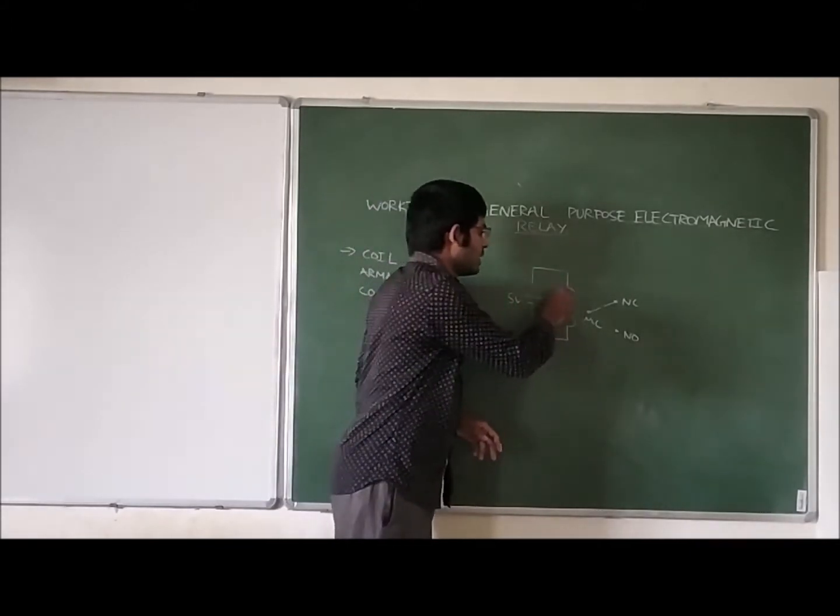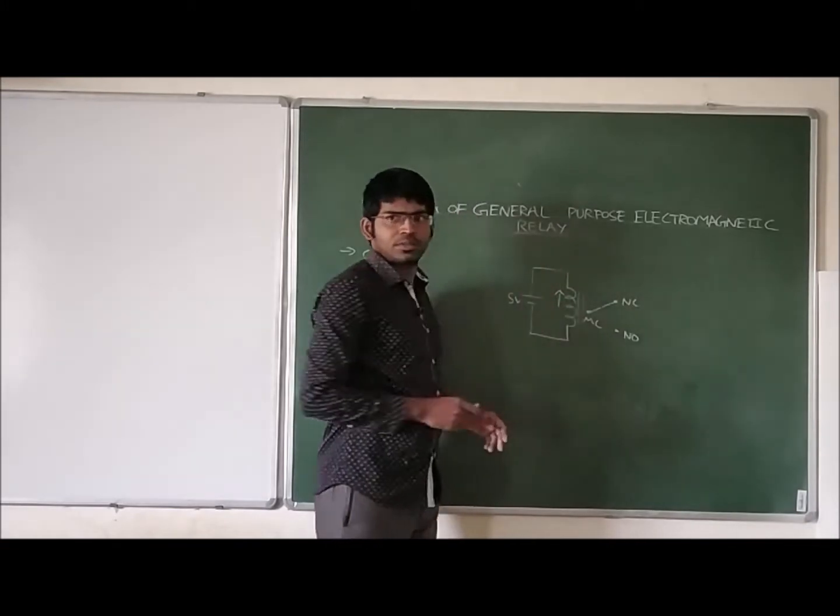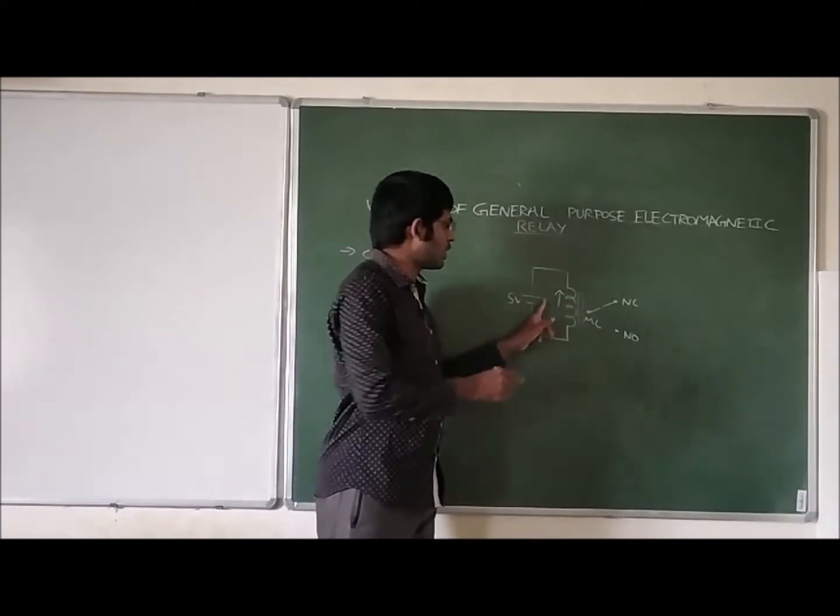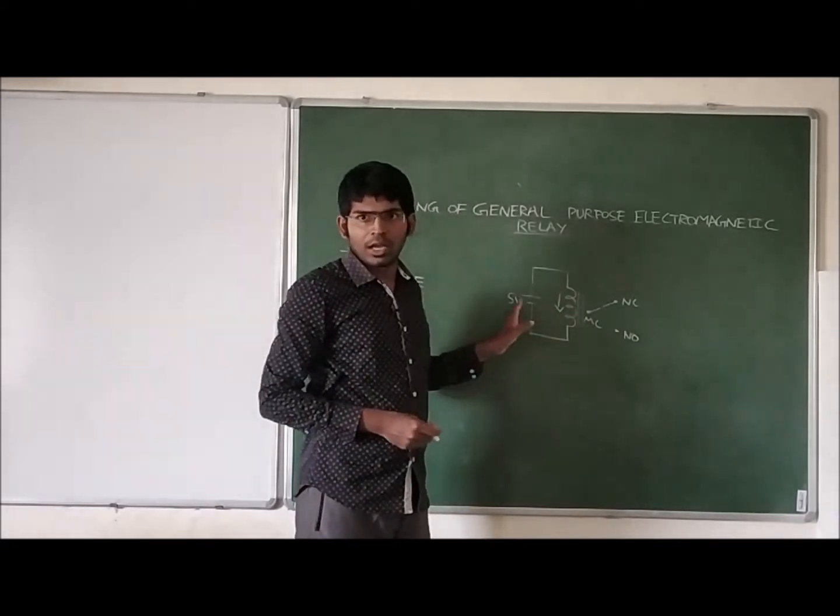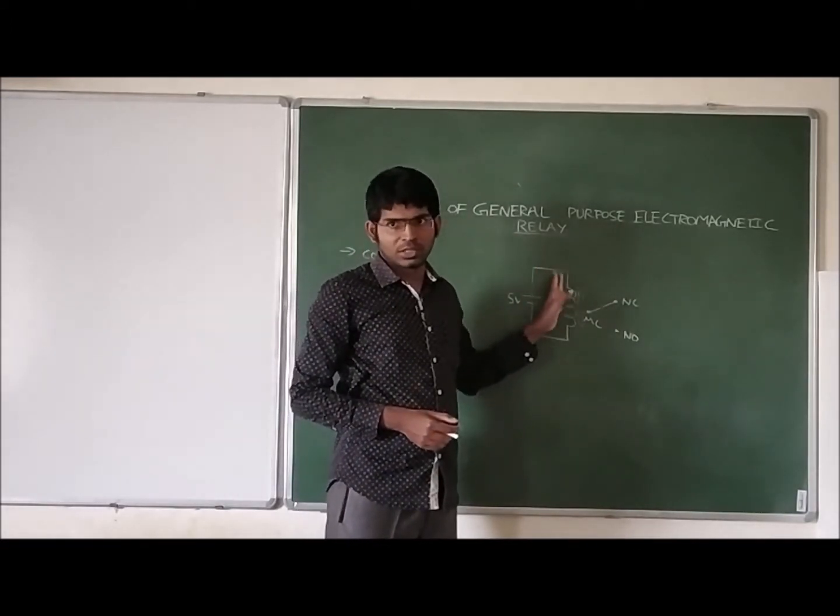And this current is observed in this direction. As electrons are flowing in this direction, so current is observed in this direction, opposite to the flow of electrons - conventional current.